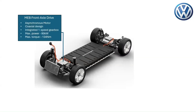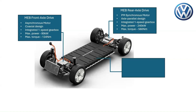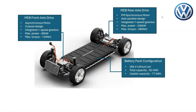The front axle drive is equipped with an efficient asynchronous motor, an integrated one-speed gearbox, and a power electronics converter unit. It delivers a maximum power of 80 kilowatts and a maximum torque of 134 newton meters. The rear axle drive features a powerful permanent magnet synchronous motor, an integrated one-speed gearbox, and a power electronics converter unit with a maximum power of 240 kilowatts and a maximum torque of 560 newton meters. The Volkswagen ID Buzz Pro is equipped with a 350-volt lithium-ion battery with a total capacity of 82 kilowatt hours. The usable capacity is 77 kilowatt hours, providing a range of approximately 210 miles on a full charge.